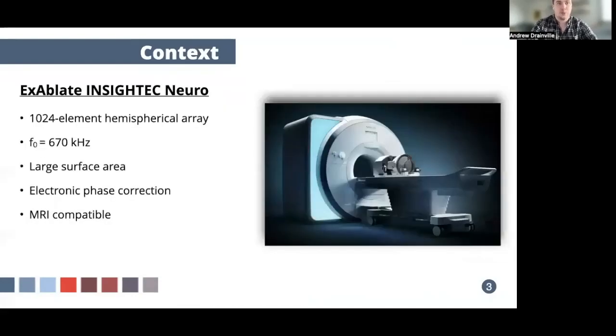To address these challenges, one of the most important systems for transcranial ultrasound is the Exablate Insightech Neurosystem. It's an ultrasound transducer composed of 1,024 elements arranged in a hemisphere operating at 670 kHz. The large surface allows for focusing across the surface of the head with phase correction for each of its elements to account for the presence of the skull.